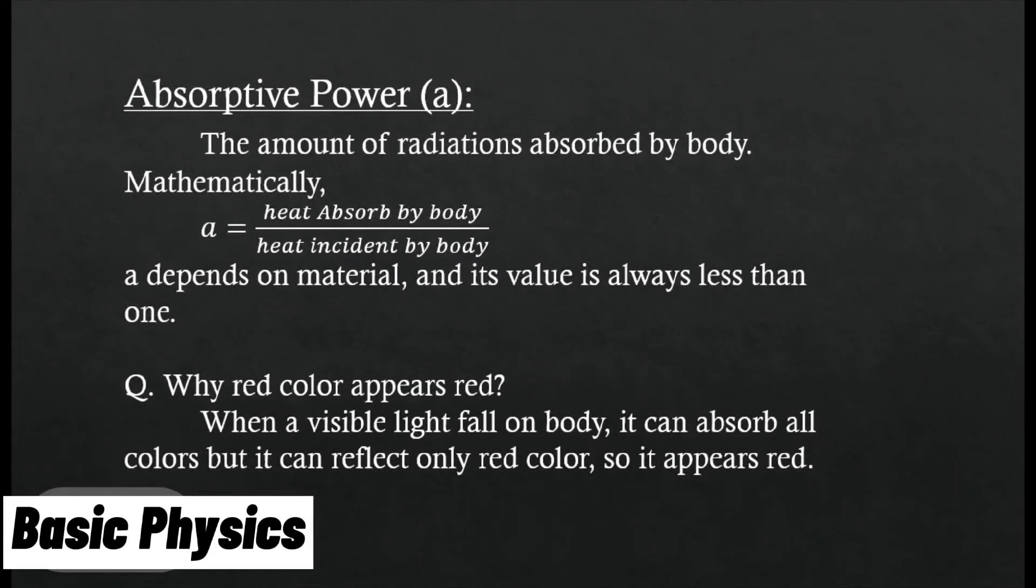Why red color appears red. When visible light falls on the body, it can absorb all colors but reflect only red color, so it appears red.